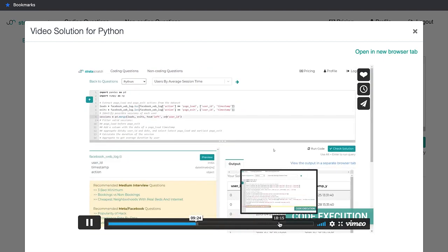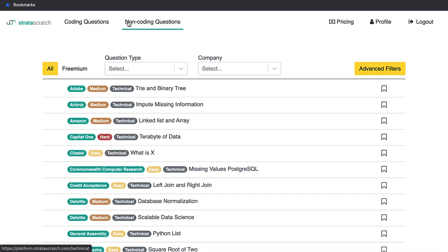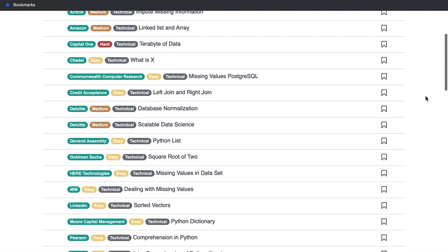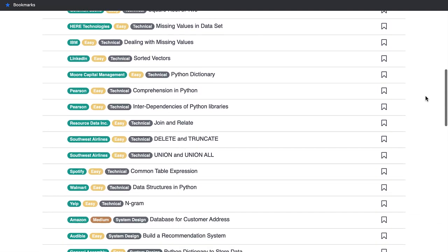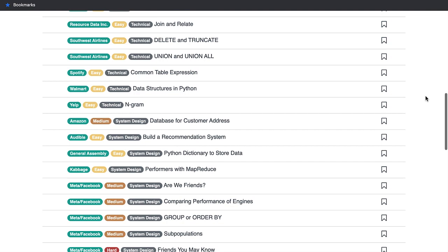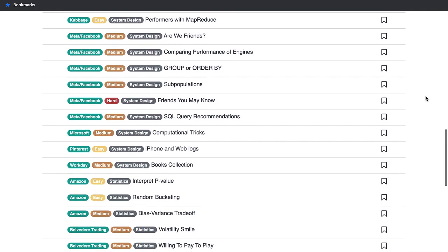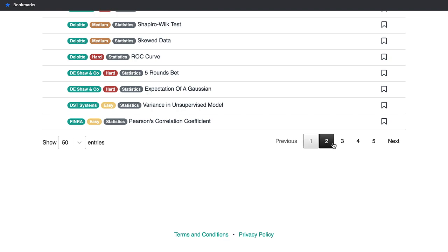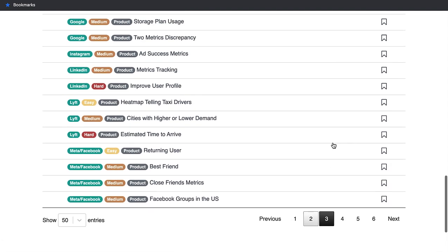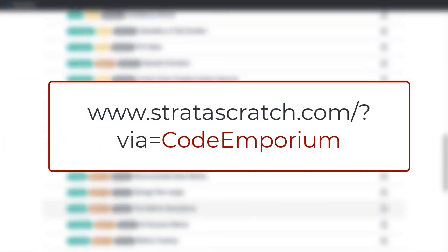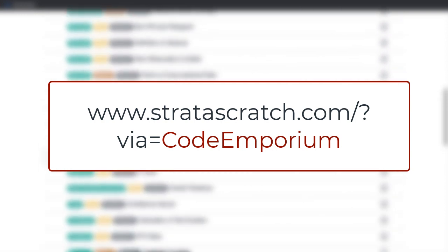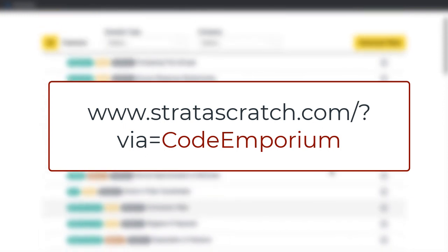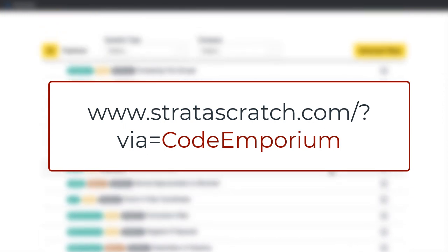New interview questions are released every month that cover SQL, Python coding, statistics, modeling, product sense, system design, and so much more. Basically, your entire data science starter kit. If this sounds interesting to you, sign up for Strataskratch using my code, CodeEmporium. I'm sure this is going to help you out in your data science journey, and good luck for those interviews. Links down in the description below.